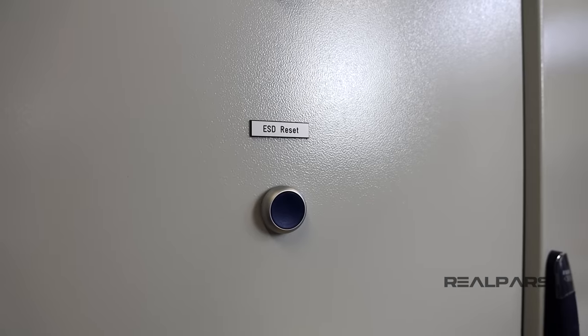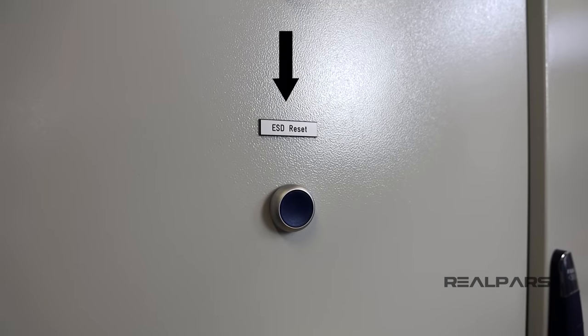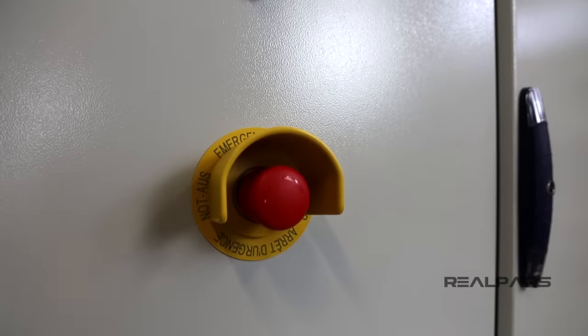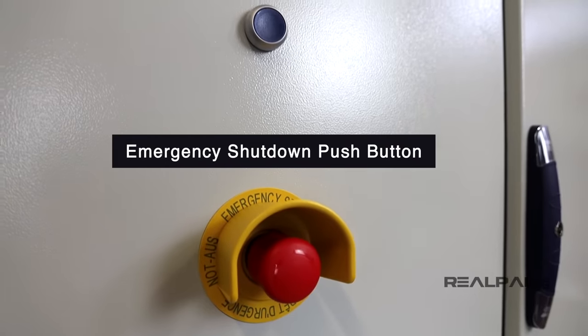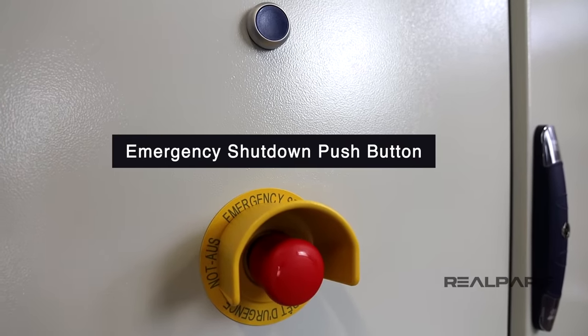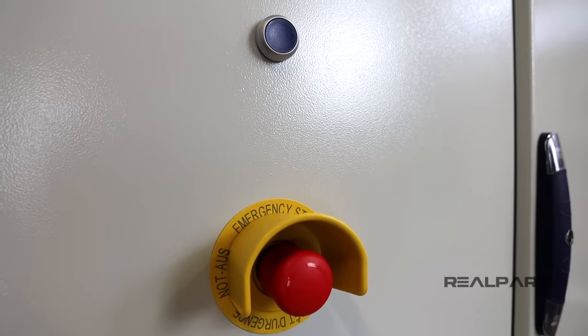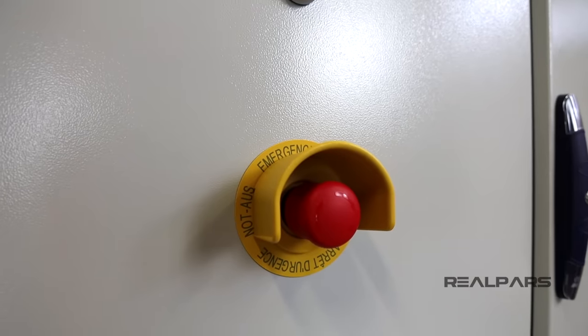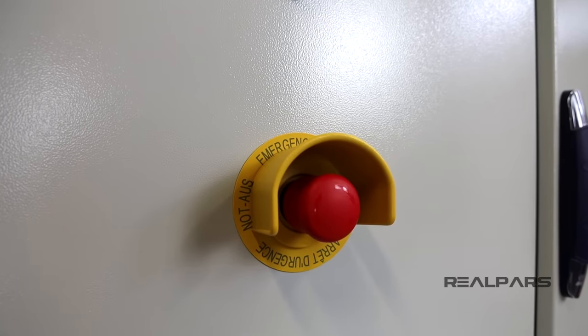Next, we have the ESD reset here, which I will get into shortly. Below this switch, we have the big red emergency shutdown push button, or the E-stop as it is often called. As the name indicates, you use this switch to shut down the whole system when there is an emergency, and by doing this, you can prevent damage being caused to the system or the people around it.